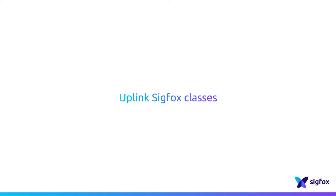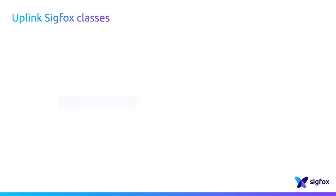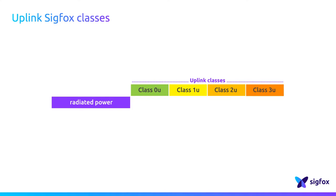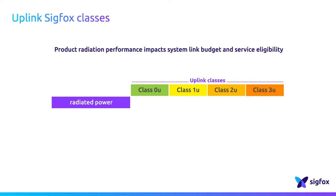The SIGFOX Ready certification comes with a device classification. SIGFOX has introduced device classes based on radiated power. The classification aims at rating the radiation performance of the device, as the ERP impacts the link budget.